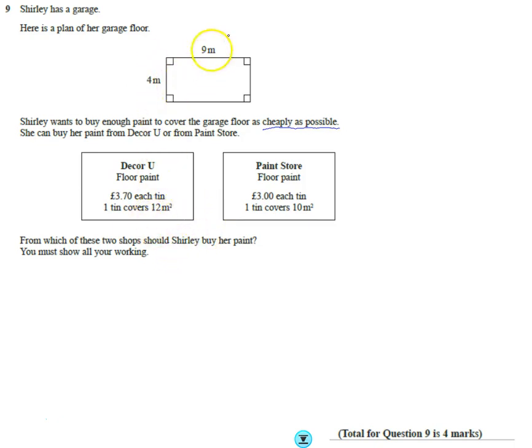Well, the first thing is she wants to cover the floor, we want to look at the area here. So our first calculation is going to be the area, which is going to be 4 times 9, or 9 times 4, which is 36 square meters or 36 meters squared.